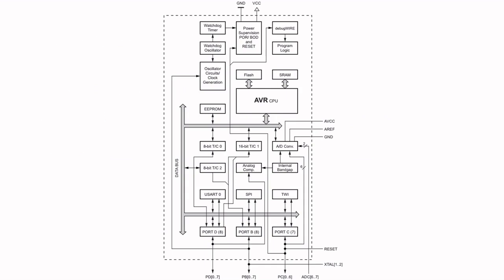Here is a block diagram overview of the ATmega328 microcontroller, taken from the datasheet. The purpose of this block diagram is to show the relevant components needed to generate the time delay: the AVR CPU, the two 8-bit timer counters mentioned earlier, and the 16-bit timer counter.